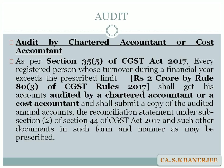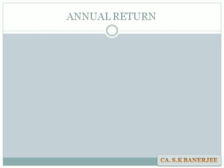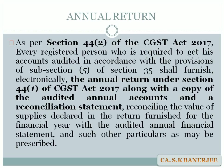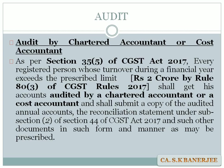Rule 80 of the CGST Rules 2017 states the prescribed limit which is 2 crores. So if your turnover is more than 2 crores, Section 35 will be applicable to you and you have to get the GST audit done by a CA or a CMA.